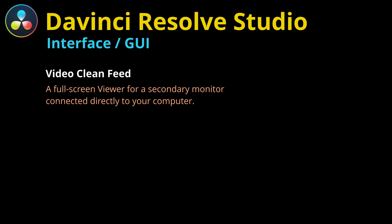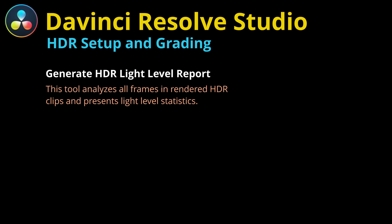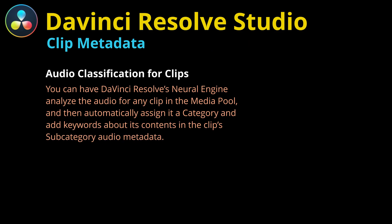Anything I'm showing here means the free version does not have this. Within the studio interface, we can bring in a video clean feed for a full-screen viewer on a secondary monitor. Studio also allows HDR mastering, meaning we can connect HDR monitoring devices through HDMI and run them through DaVinci Resolve. We can also generate HDR light level reports in studio. For upscaling, studio allows Super Scale high-quality upscaling, whereas the free version is limited.